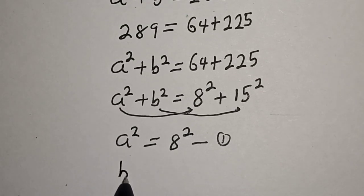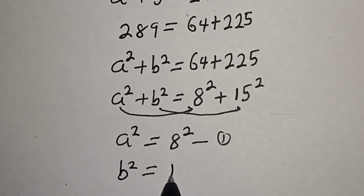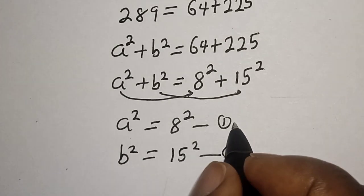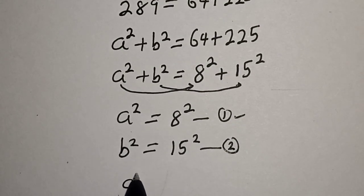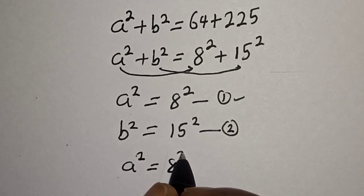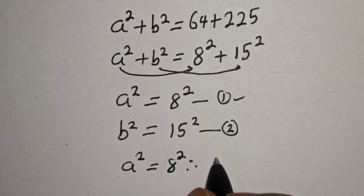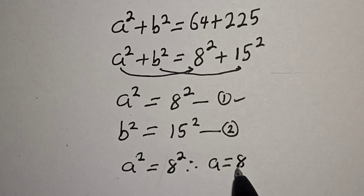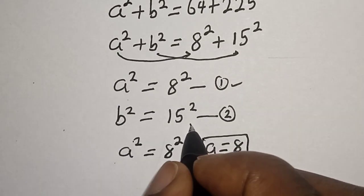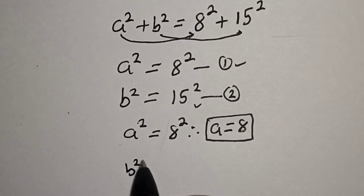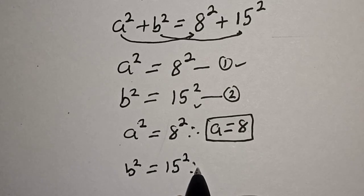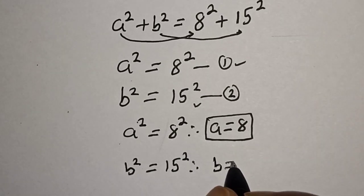And b squared is equal to 15 squared. From a squared equals 8 squared, therefore a is equal to 8. And from b squared equals 15 squared, therefore b is equal to 15.